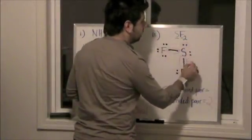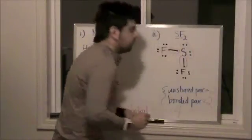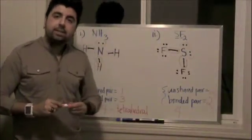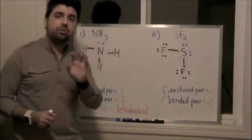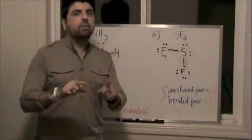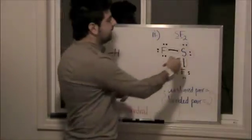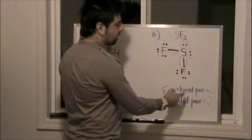If we look at the number of unshared pairs, we have one, two. So, we have a total of two unshared pairs, two bonded pairs, which gives us a total of also four regions of high-density electrons.